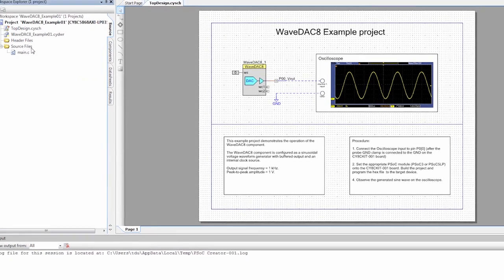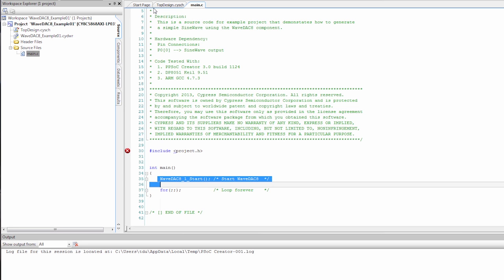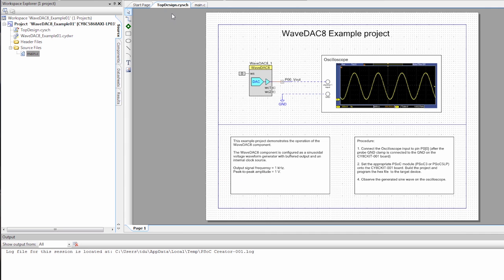And you'll see here the project opens with the schematic. All that's on the schematic is my WaveDAC. If we go to Main, all that's in here is WaveDAC Start, and everything else happens in hardware with a DMA and a DAC. So, we'll go back to the schematic.